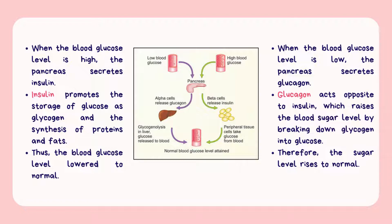When blood glucose is low, the pancreas secretes glucagon. Glucagon acts opposite to insulin, raising blood sugar by breaking down glycogen into glucose, bringing blood sugar back to normal.